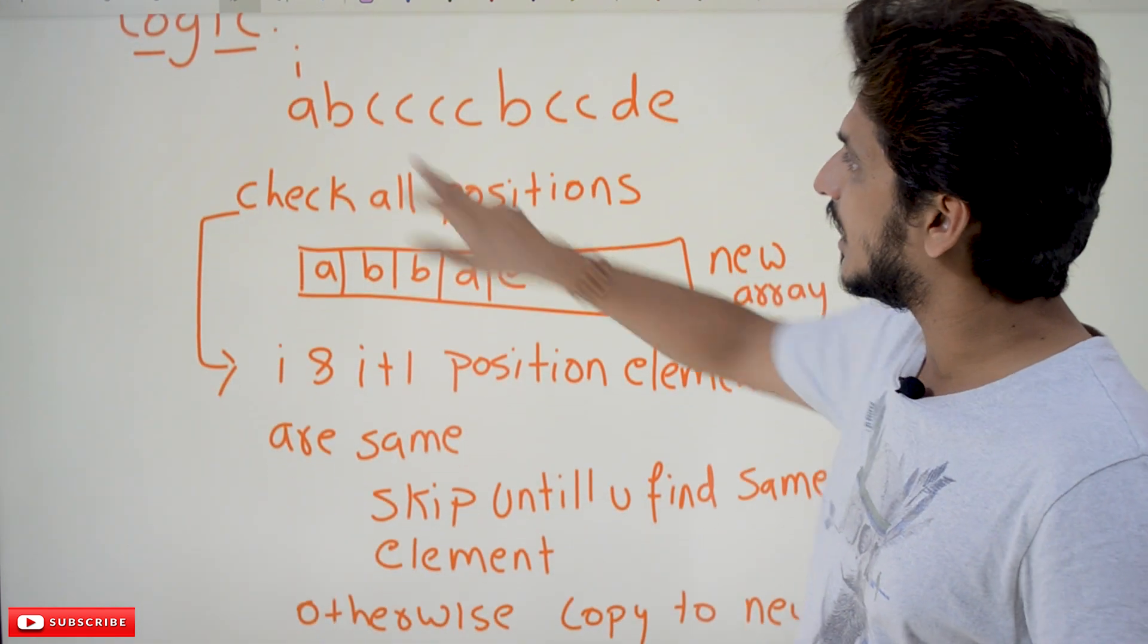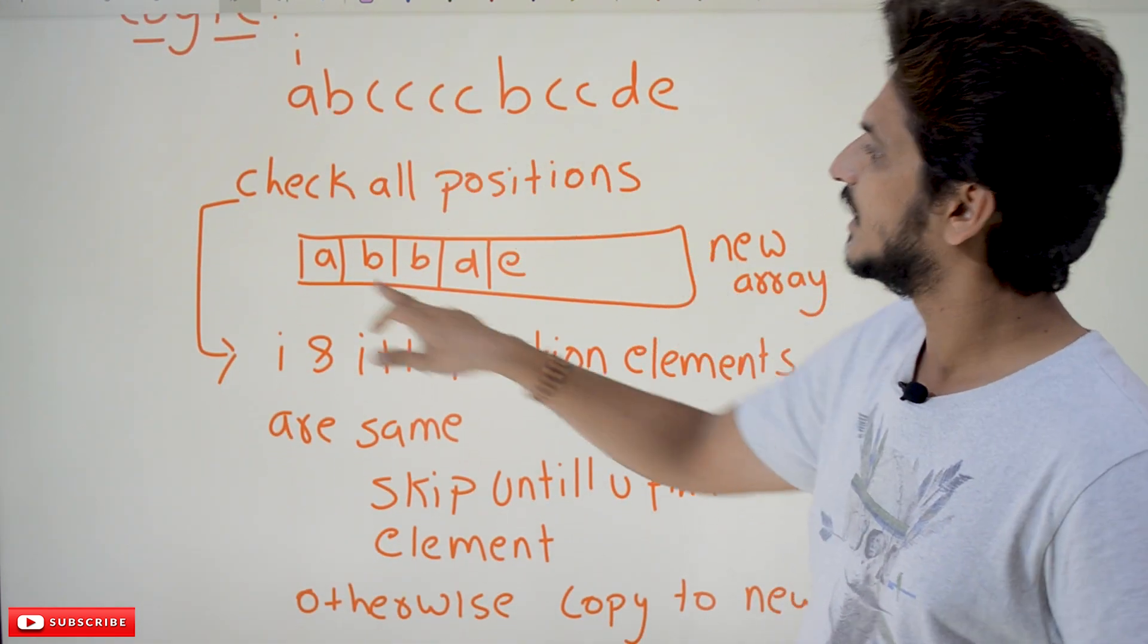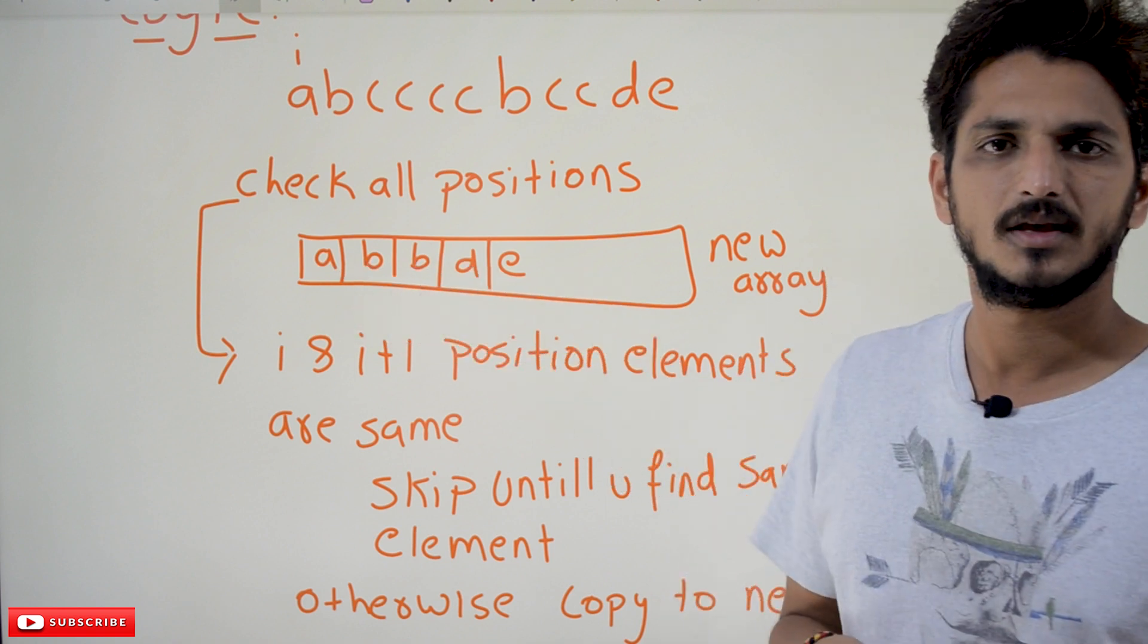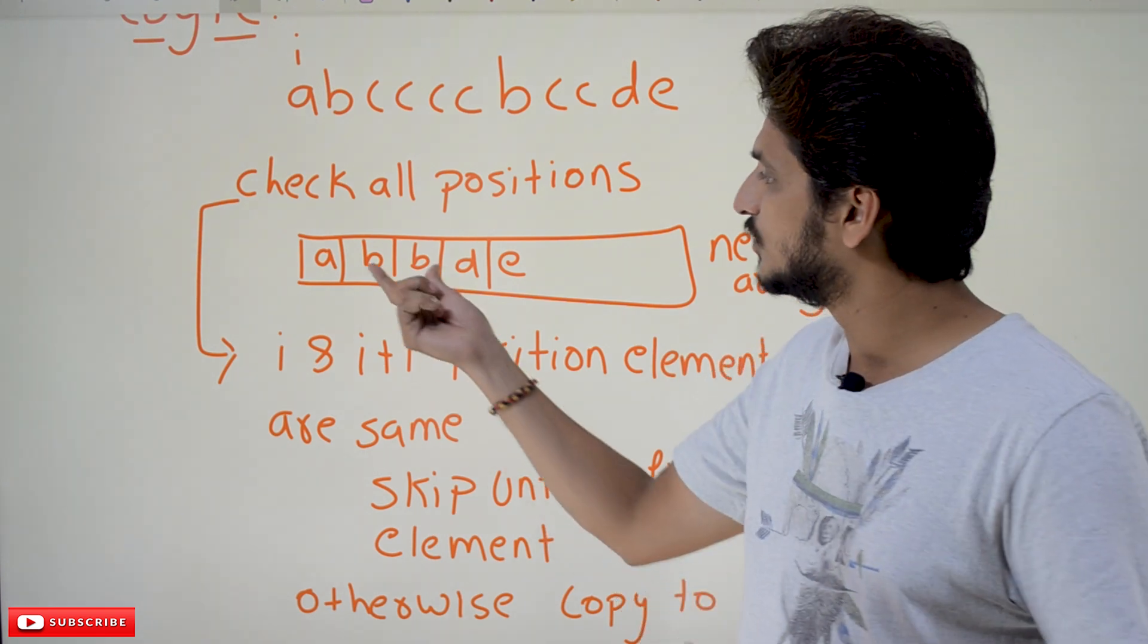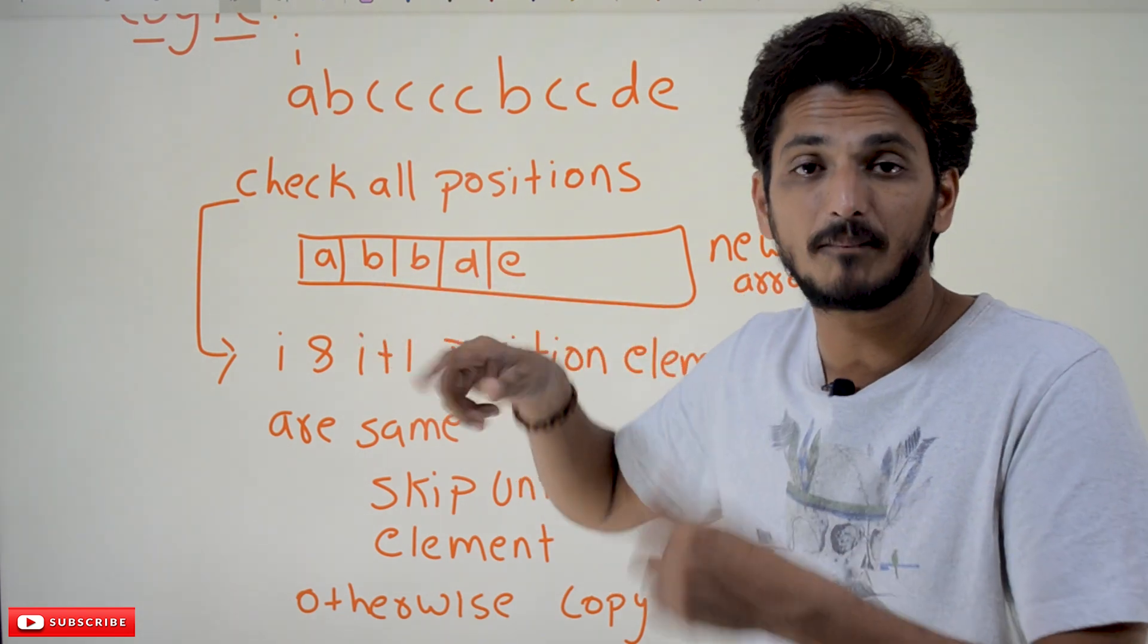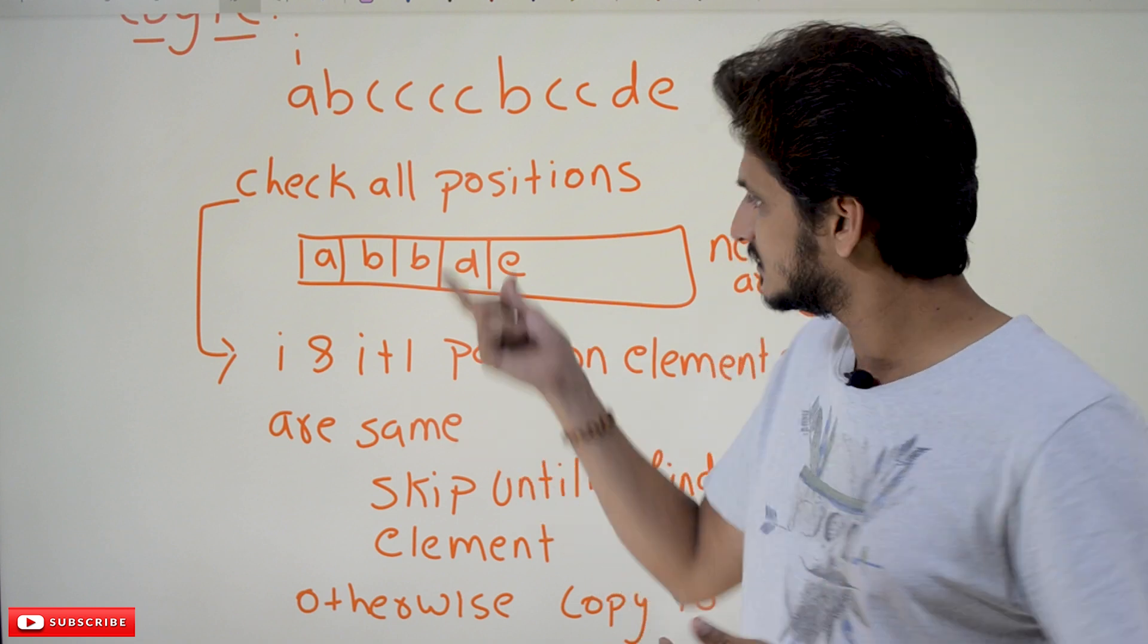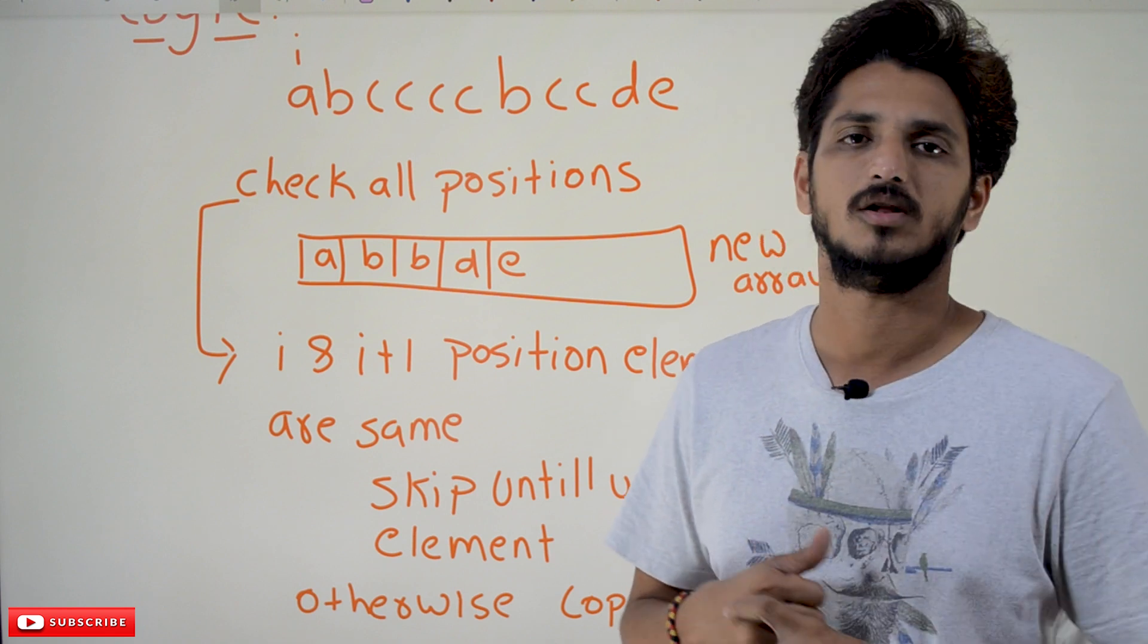But remember, after removing the c's, what's the output you got? abbde. So again, do this for the new string. What is the new string in the new array? This one. Take this as input and again apply the same logic. If you want to apply the same logic on the different string, what's the function you have to? We go with recursive function calls.